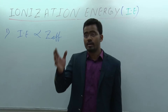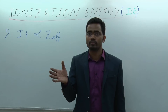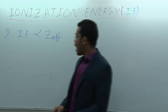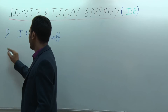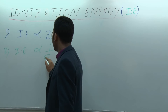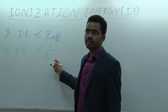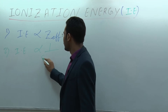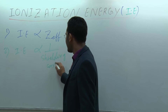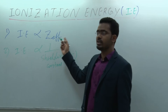If there is shielding by inner electrons, then ionization energy decreases. Therefore, ionization energy is inversely proportional to sigma, the shielding constant. Sigma is the shielding constant, and Z-effective is the effective nuclear charge.